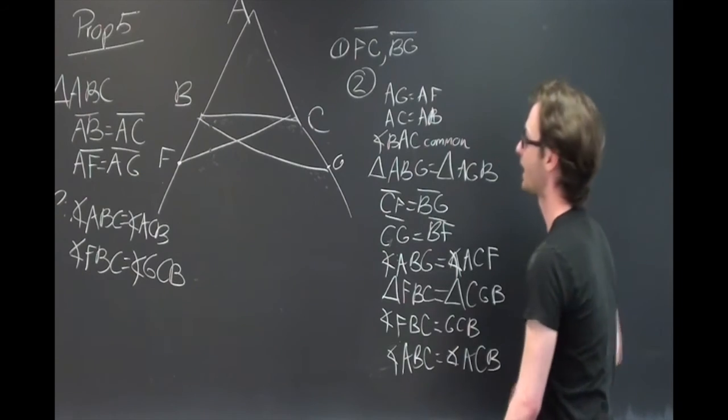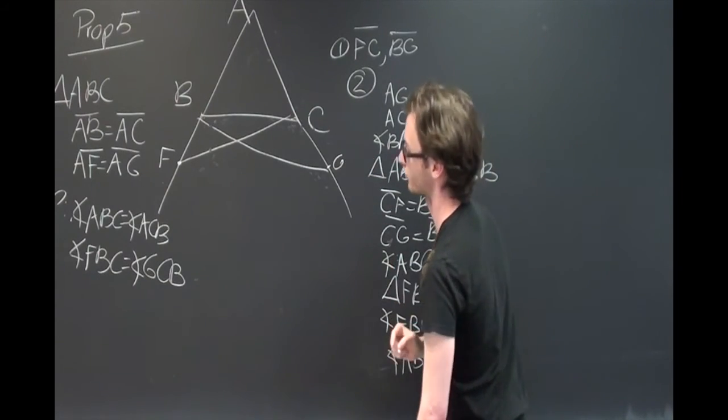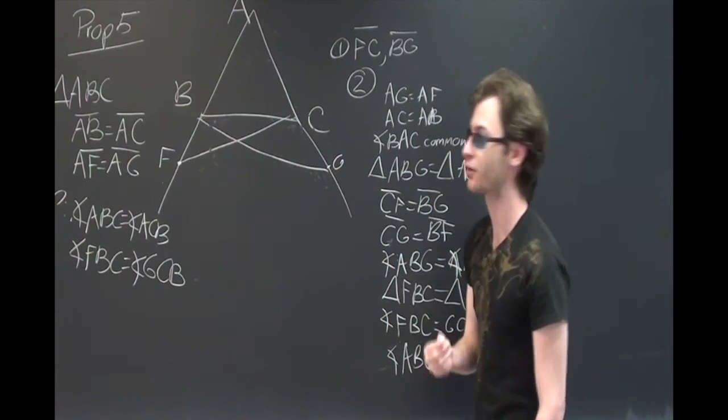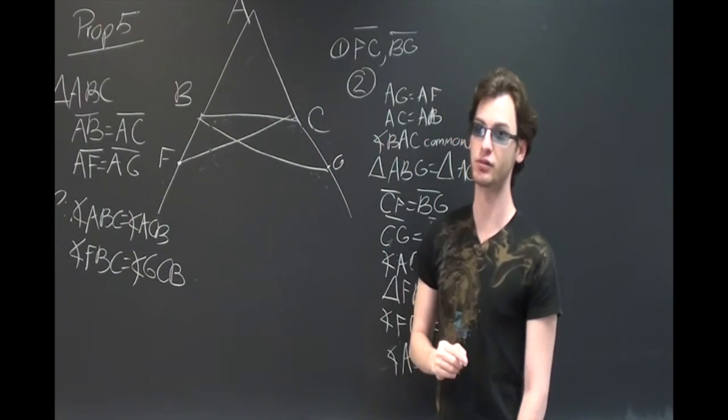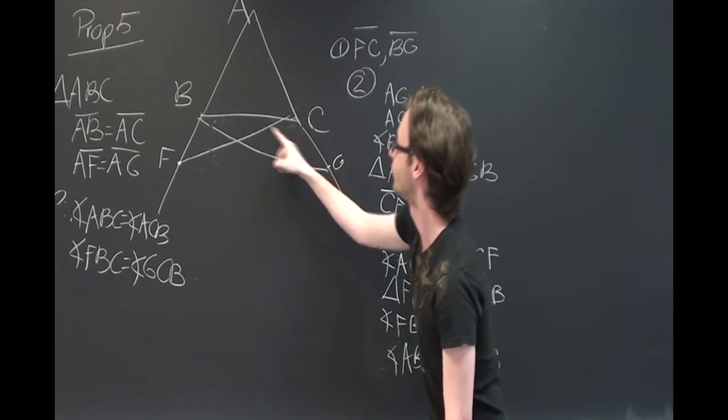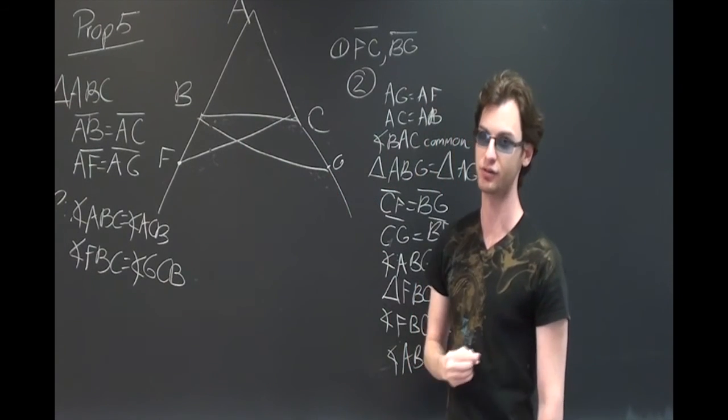And these are the angles on the inside of our isosceles triangle. Therefore, we have proven that for isosceles triangles whose sides are equal to each other, the angles at their bases are equal to each other, and the angles underneath the bases are also equal to each other.